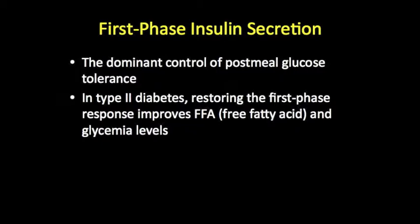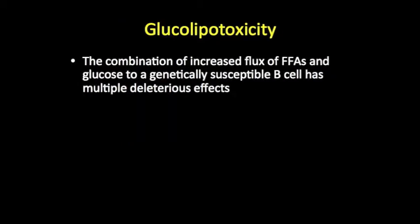There are a few features that we find in most people who are developing type 2 diabetes. First is the concept of decreased first phase insulin secretion. First phase insulin secretion exerts dominant control of glucose levels immediately after a meal is eaten. This loss of acute secretion contributes to glucose intolerance because once your blood sugar starts rising, the consequences of glucose and free fatty acid toxicity begin as well.